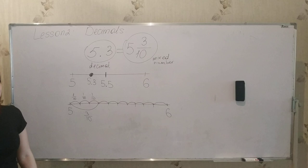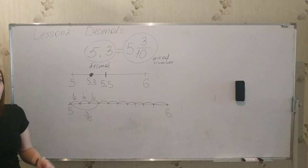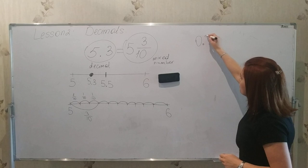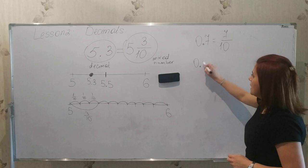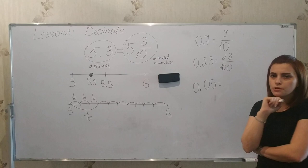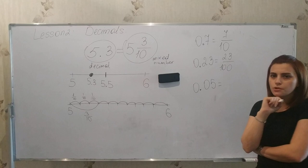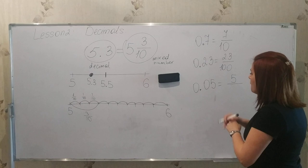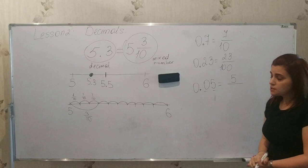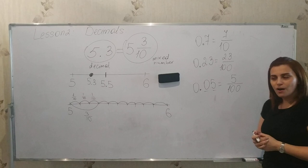Let us now see how to convert decimals to fractions and fractions to decimals. If I have zero point seven, it means seven out of ten. If I have zero point two three, it is twenty-three out of one hundred. If I have zero point zero five, the numerator is five — we don't write a leading zero in the numerator — and we have two decimal places, so the denominator is one hundred. That gives us five hundredths.